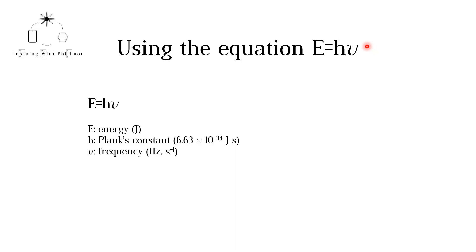we will be looking at how to use the equation E equals h nu. In the previous video, Absorption and Emission Spectra, we saw that electrons can transition to a higher energy level if they absorb light of a particular wavelength. In this video,